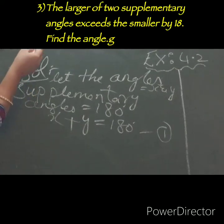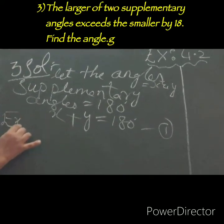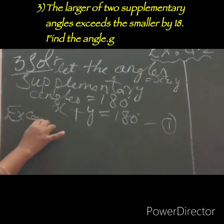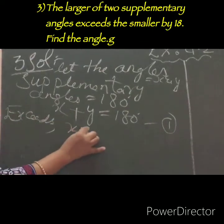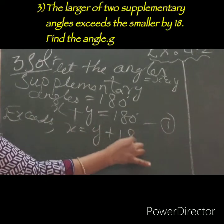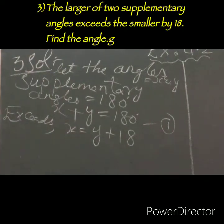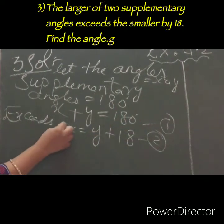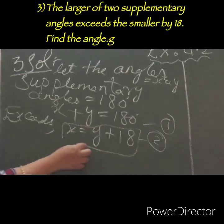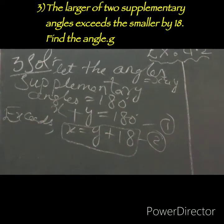Now please read the next line of the question. It says one angle exceeds by 18, so I can write X equals to Y plus 18. This is the second equation. What we do with the second equation is substitute X equals Y plus 18 into equation 1.